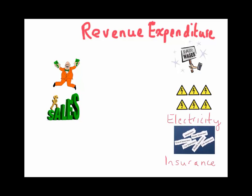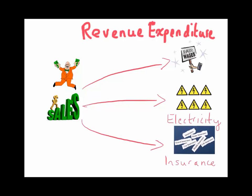Examples of revenue expenditure include the wages or salaries paid to workers to make the toy trains, the electricity needed to power the machines that manufacture the toy trains and light up the factory, and the insurance payments made on a day-to-day basis to cover accidental damage, injuries to workers, or a worst-case scenario such as a fire in the factory.